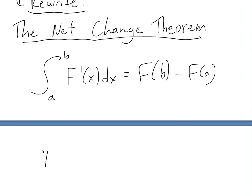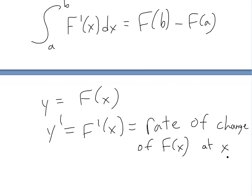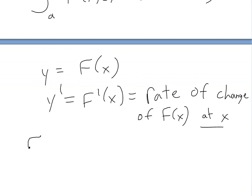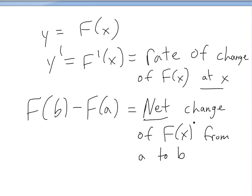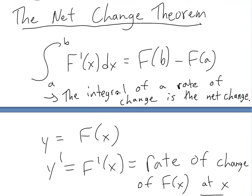So if we let y equal just a function f of x, then y prime equals f prime of x. Recall that this is just the derivative, or the rate of change, of f of x at x. And then this value f of b minus f of a equals the net change of f of x from a to b. You're just subtracting the difference. The 'net' here is because this could be decreasing or increasing. So the integral of a rate of change — that's the derivative — equals the net change. That's where this net change theorem comes into play.